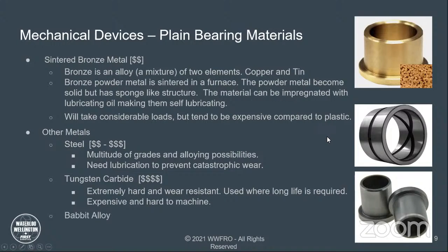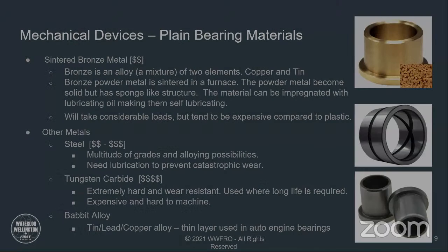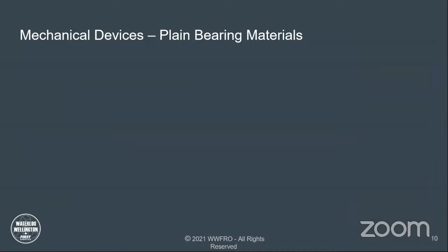Babbitt alloy was developed back in the 1800s and is an alloy of tin, lead, and copper. It is still used as a thin layer in automobile engine bearings on crankshafts.